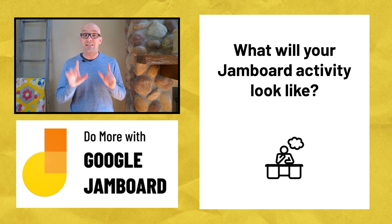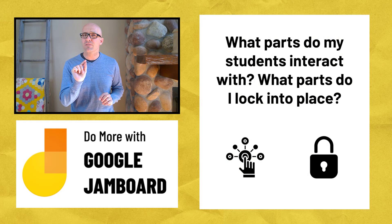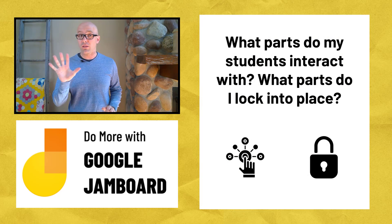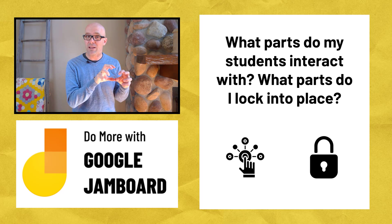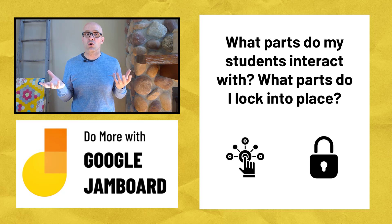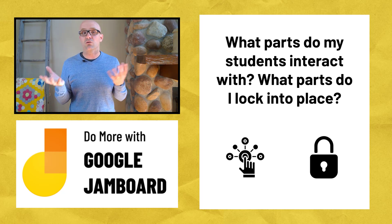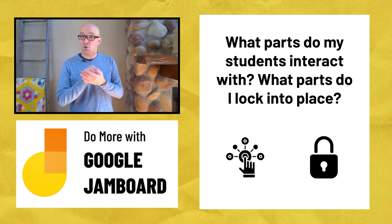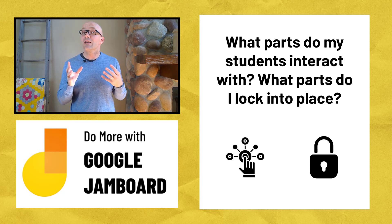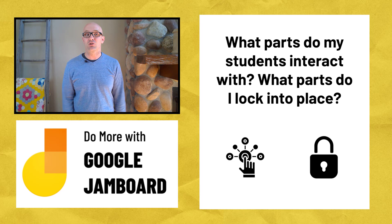Once you have an idea of what it's going to look like, ask yourself this question: what parts of the activity do my students interact with, and what parts do I want to lock into place so that students can't edit them? Think of a traditional worksheet that you would copy on the photocopier. The part that comes out of the photocopier is locked in place — students can't change, edit, or move those parts around. But the parts where students write, those are the interactive parts. And thankfully, with Jamboard, we can do way more interactive hands-on learning than we can with just a paper worksheet.